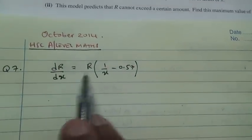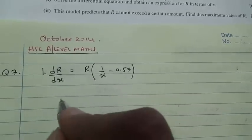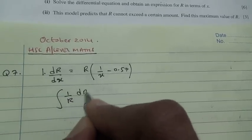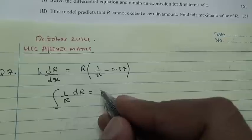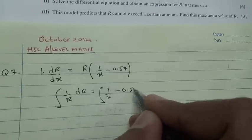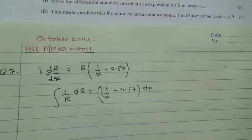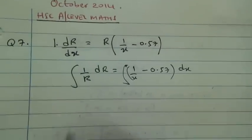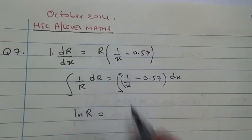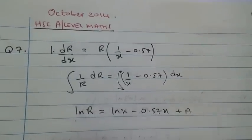First, we're going to separate the variables. We're going to send R on this side. We have 1 divided by R. The integral of 1 over R dR is equal to the integral of 1 over X minus 0.57 dx. The integral of 1 over R is ln R equals ln of X minus 0.57X plus the constant A.